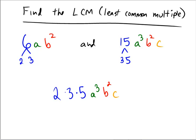So for the final answer, 2 times 3 is 6, times 5 is 30, a³b²c.